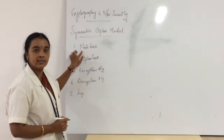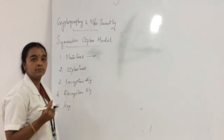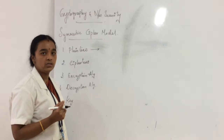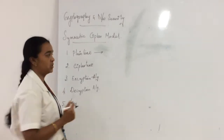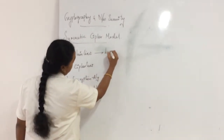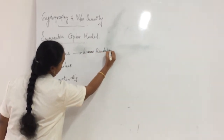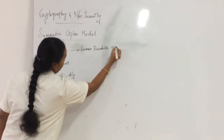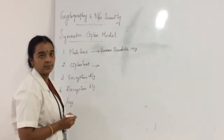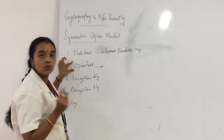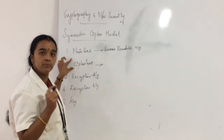What is Plain Text? Plain Text is nothing but a human-readable message, otherwise an intelligible message. What is Cipher Text? Cipher Text is a coded message, otherwise an unintelligible message.